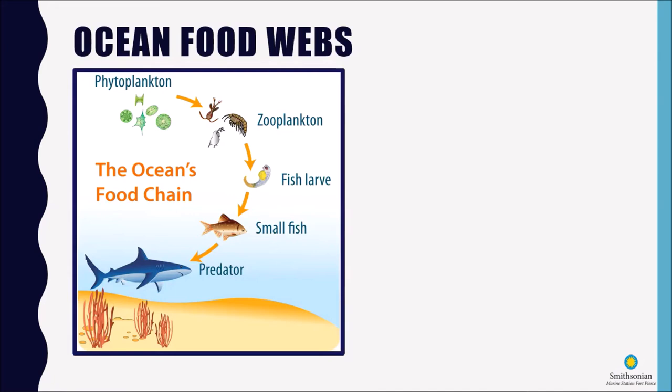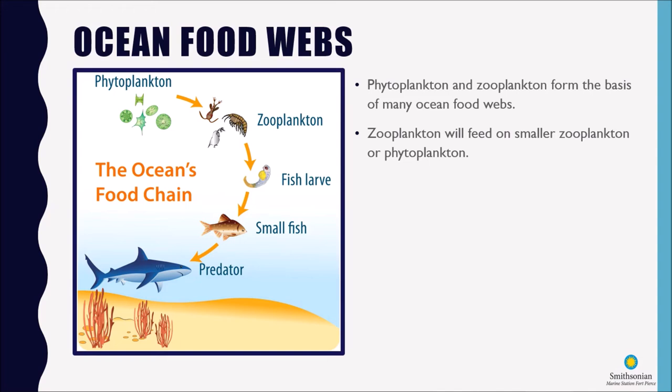Okay so let's talk a little bit about ocean food webs next, because phytoplankton and zooplankton are crucially important parts of the ocean's food chain. It really forms the basis of many of those food webs and I have a very simple graphic there on the left for you as well, you can take a look.